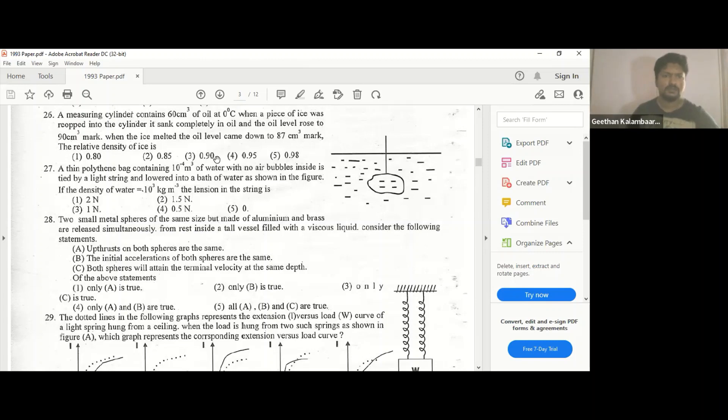When the ice melted, the oil level became down to 87 cubic cm mark. The relative density of ice is.